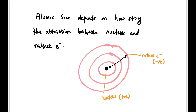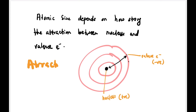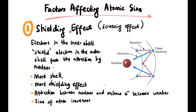Atomic size depends on how strong the attraction is between the nucleus and the valence electron at the outermost shell. The stronger the attraction, the smaller the size, and vice versa. The first factor affecting atomic size is the shielding effect, or screening effect, in which electrons in the inner shell shield the outer shell electrons from attraction by the nucleus. The more shells there are, the greater the shielding effect, making the attraction between nucleus and valence electron weaker, resulting in a bigger atom size.